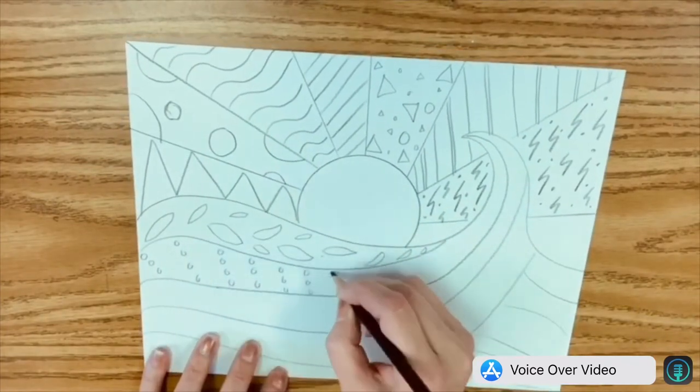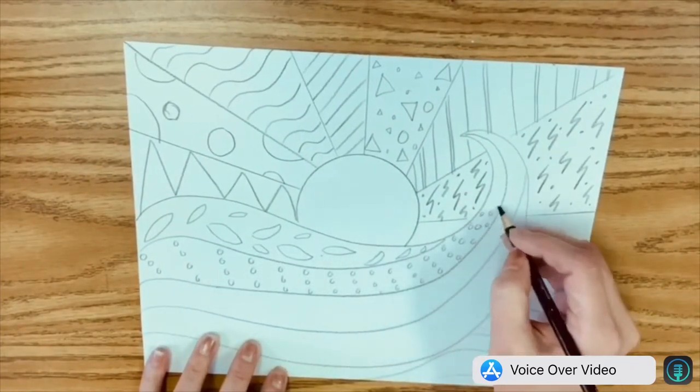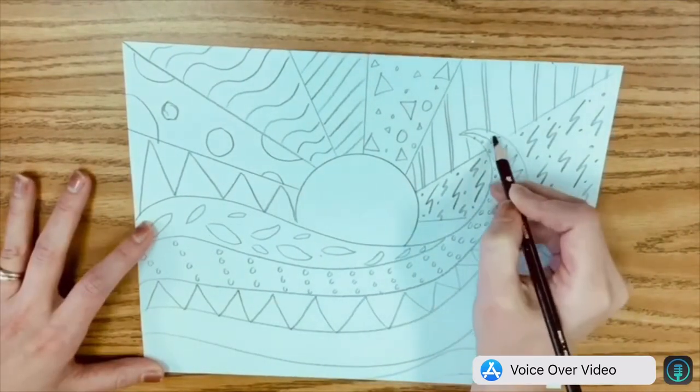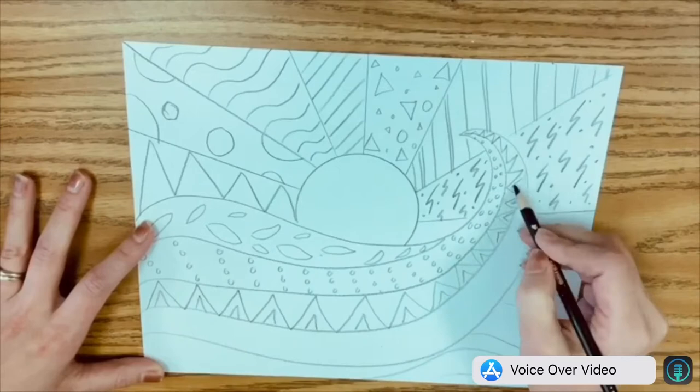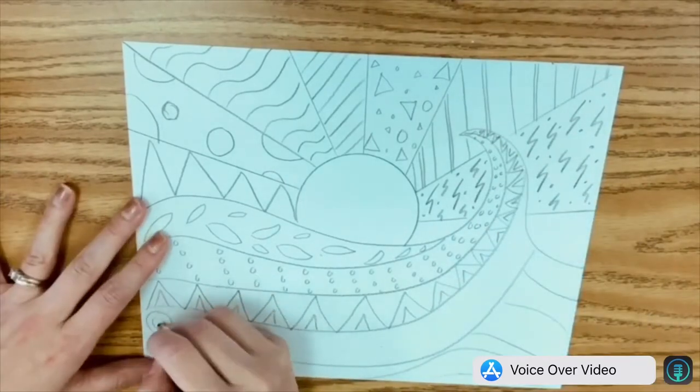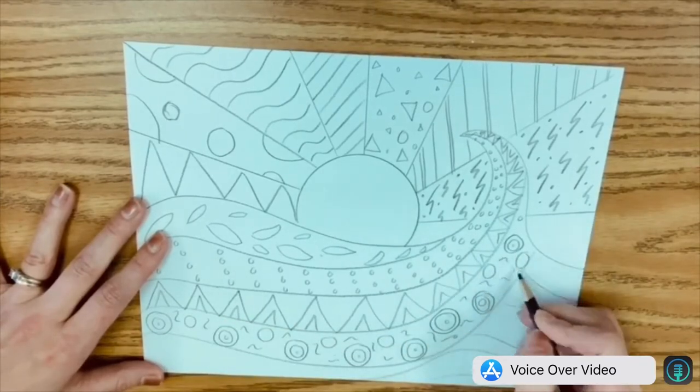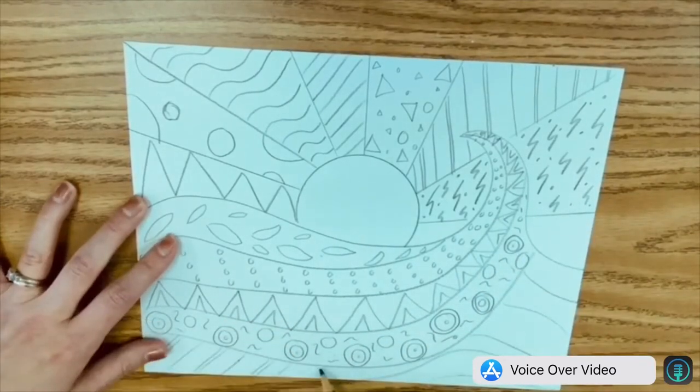And just keep filling in those spaces until there's no more white space, except for the sun. That can be white space. That doesn't have to be filled in. But again, you're the artist. So whatever you want to do, you fill it in however you want, you choose.